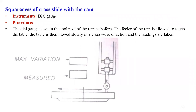Another test is squareness of the cross slide with the RAM — checking the perpendicularity of the cross slide with the RAM. We require a dial gauge. The dial gauge is set in the tool post of the RAM, and its feeler is allowed to touch the table. The table is then moved slowly in the crosswise direction and readings are taken.